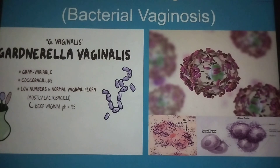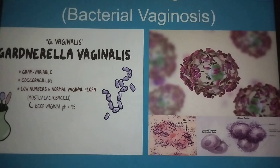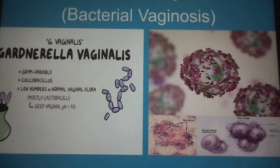Another exam question: what is representative of bacterial vaginosis? We have here your clue cells. Your clue cells are squamous epithelial cells surrounded with bacteria. Here are your nuclei, which you can see in the lower right-hand corner. These are normal vaginal epithelial cells surrounded with the bacteria.